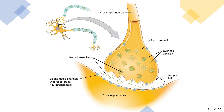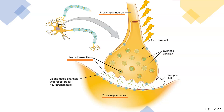What you see here is called the synapse. The cell that is sending the signal is called the presynaptic neuron, whereas the neuron that is receiving the signal is called the postsynaptic neuron. Here, at the synapse, the neuron changes the electrical signal of the action potential to a chemical signal.